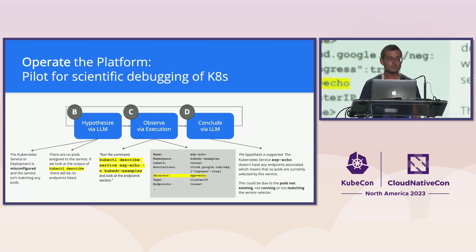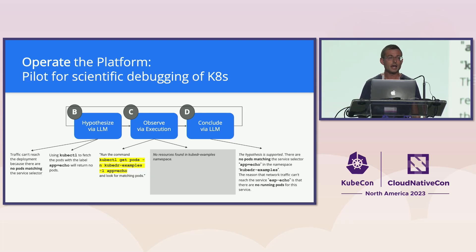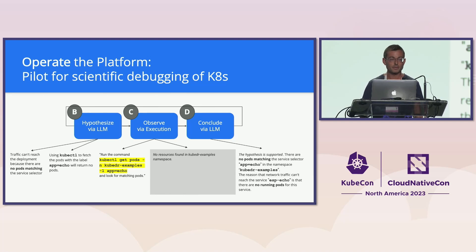Here's an example for that previous problem of network accessibility. The first hypothesis the model comes up with is that the service is misconfigured, and we should run kubectl describe to test that. When we feed that observation into the AI, it concludes the service is misconfigured because there are no endpoints listed. Next, the AI generates a new hypothesis — that there's a problem with the pods — and we run kubectl get pods to debug that. When we feed that observation back in, the model correctly concludes there are no pods that match the label selector from the service.